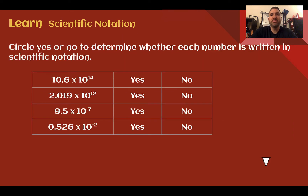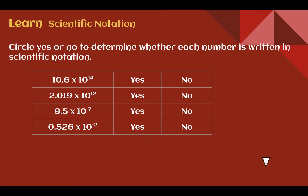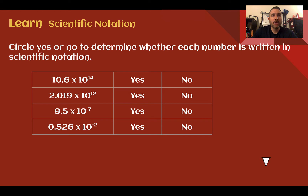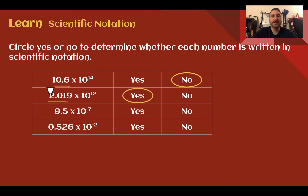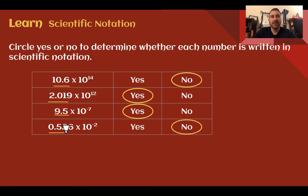Circle yes or no to determine whether each number is written in scientific notation. For the first one, it is not — that number is not between 1 and 10. For the second one, 2.09 is between 1 and 10 and it's times 10 to a power, so that's good. The third one, 9.5, is good — it's between 1 and 10, and even if our exponent is negative, that's fine. Last, 0.526 is not — it is less than 1.